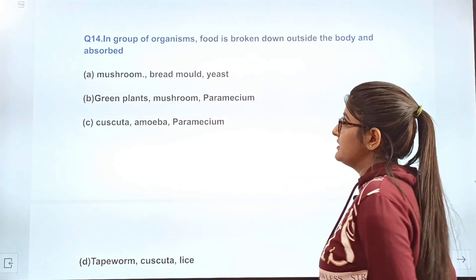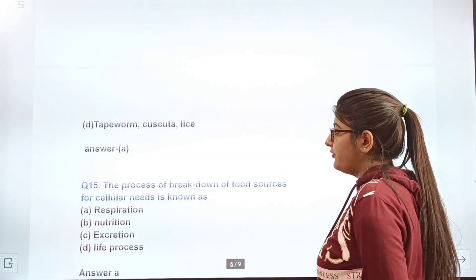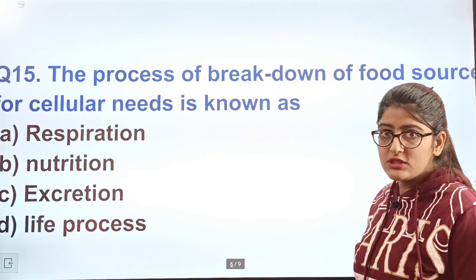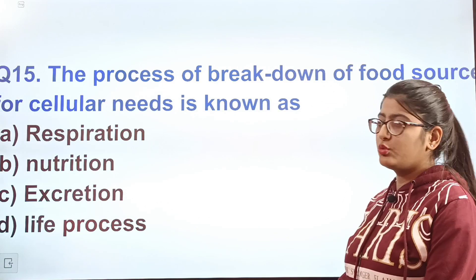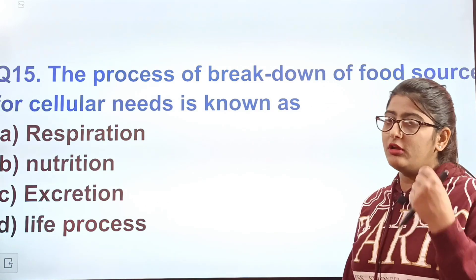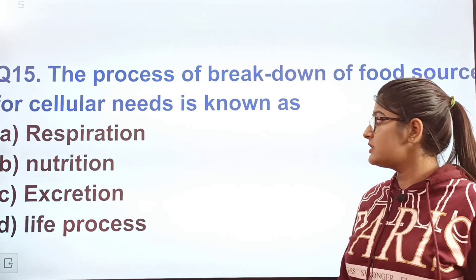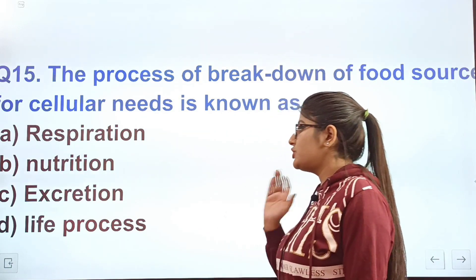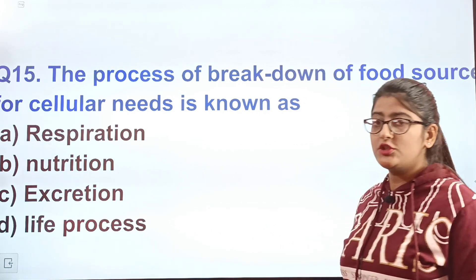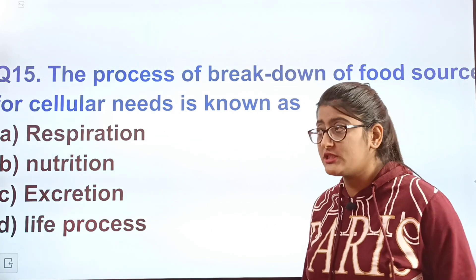Question 15: The process of breakdown of food sources for cellular needs is known as — option A respiration, option B nutrition, option C excretion, option D life processes.